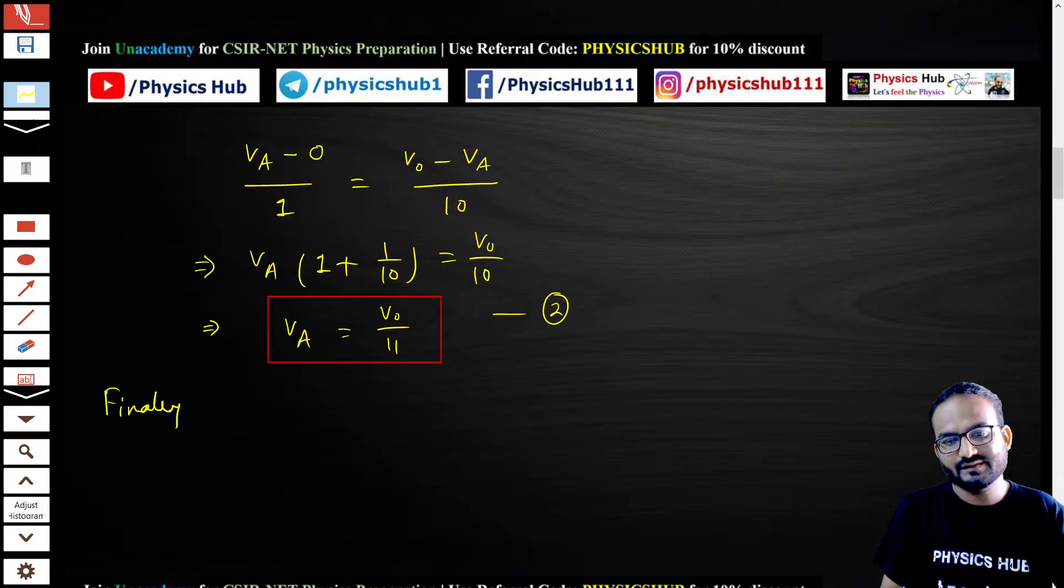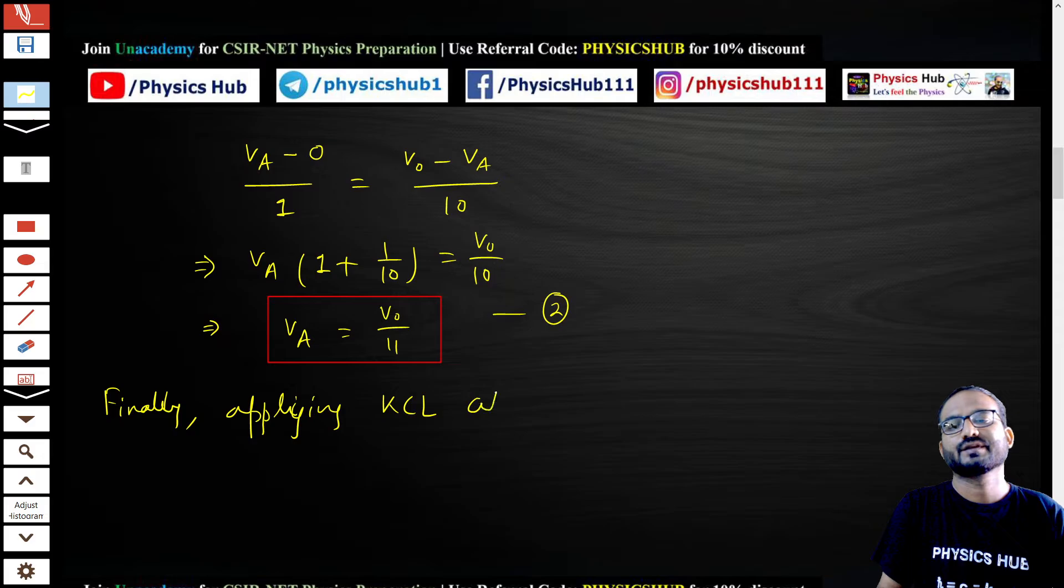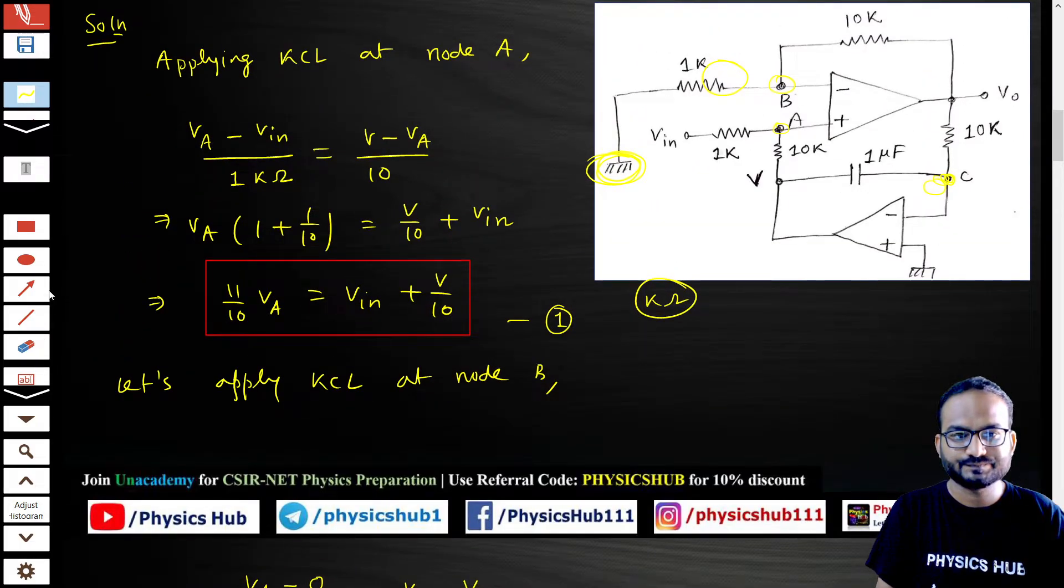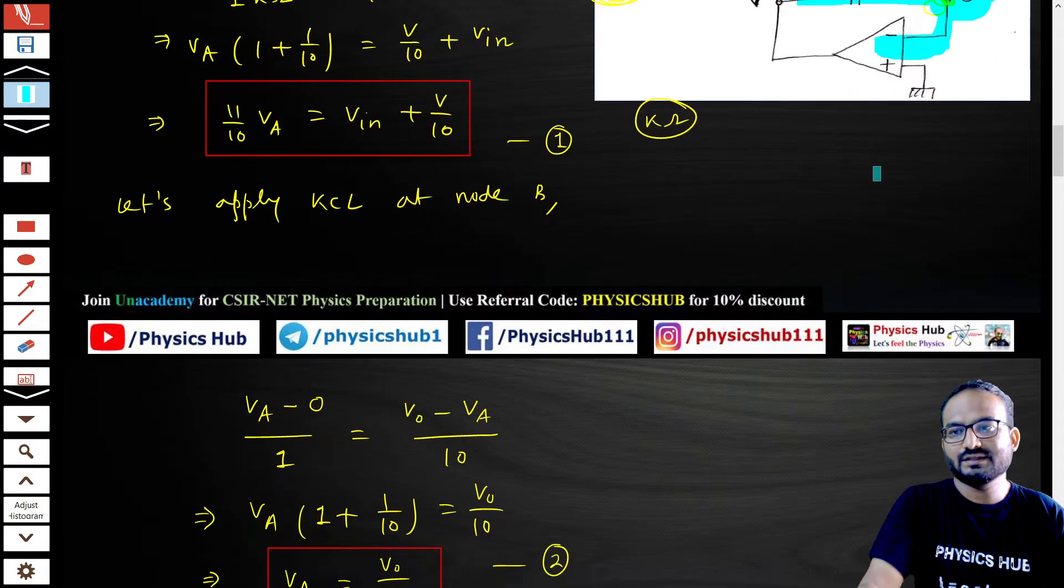Finally, let's apply KCL at node C. Now let's try to look at node C. Node C is connected to this, this, and this. No current is flowing through this, so let's write that.